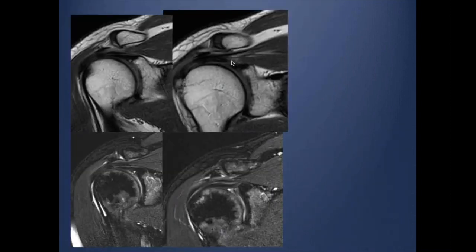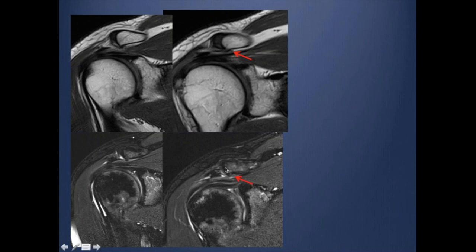Another cause is osteophyte. As you can see here, there is an osteophyte of the distal clavicle. When we see this, it is very important to mention it — particularly if it is indenting the supraspinatus — because surgeons might consider performing a distal clavicle osteotomy in addition to acromioplasty.